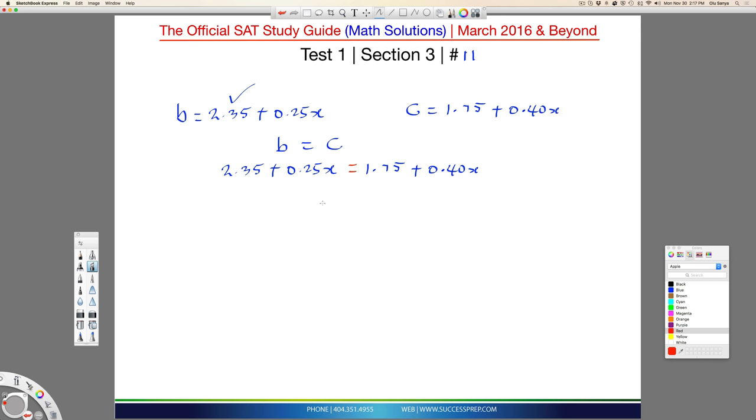So this equal to this. And at this point, we just bring like terms together. So best way to do this is, with like terms, I like to move the smaller number. So I know 2.35 and 1.75 should go together, but I will move the 1.75 because it's the smaller one. And for the 0.25x and 0.40, I would obviously move this one as well. So at this point, we pretty much have 2.35 minus 1.75 equal to 0.40x minus 0.25x.